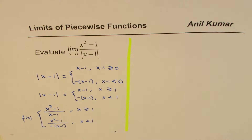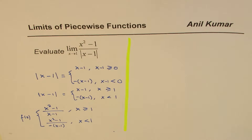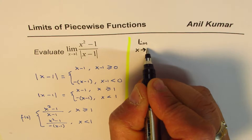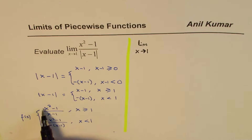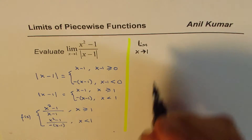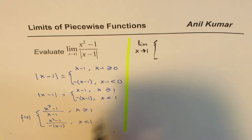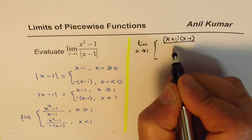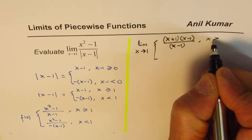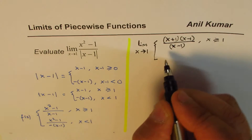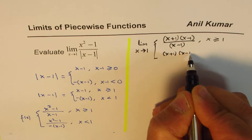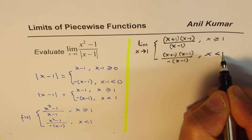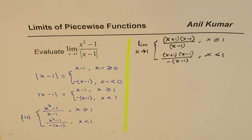Now I am going to rewrite the question itself. We have the limit as x approaches 1. When I write x squared minus 1, that can be factored as x plus 1 times x minus 1. So the function becomes x plus 1 times x minus 1 divided by x minus 1, where x is greater than or equal to 1, and x plus 1 times x minus 1 divided by minus of x minus 1, when x is less than 1.